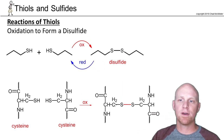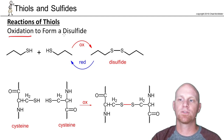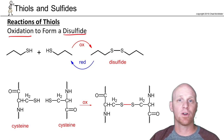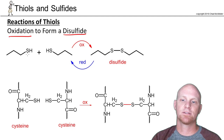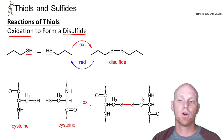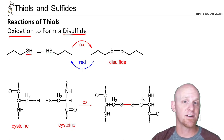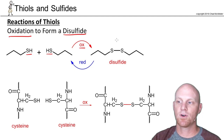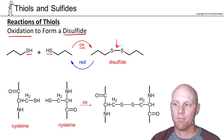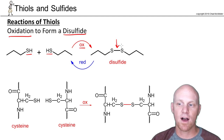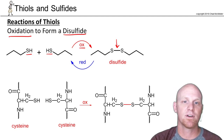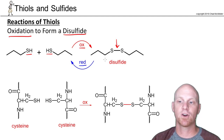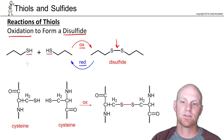There's really only one major reaction of thiols, and that's oxidation to form what's called a disulfide — sometimes called a disulfide bridge in the context of protein structure. You've got two thiols, and under oxidizing conditions with an oxidizing agent, they join together and form a disulfide bond. The mechanism isn't super important. A variety of different oxidizing agents can pull this off, and it is completely reversible — you can add a reducing reagent and convert it right back to two separate thiols.